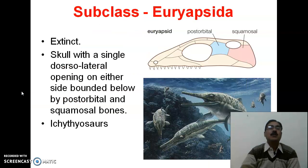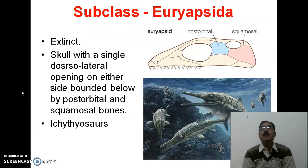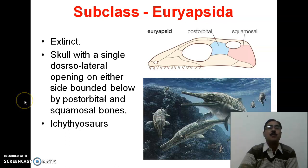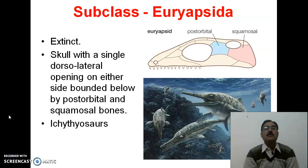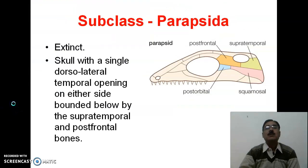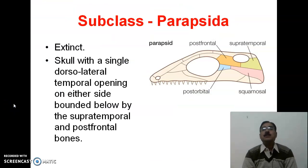Now about the second subclass, that is Euryapsida. You can see the post-orbital and squamosal are shown with two different colors. The skull has a single dorsolateral opening on either side, bounded below by post-orbital and squamosal bones — so the single vacuity is clearly visible, present on the upper side of post-orbital and squamosal bones.